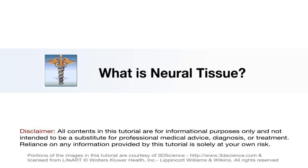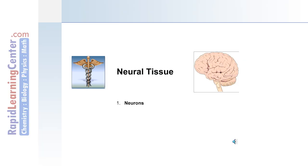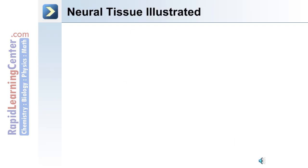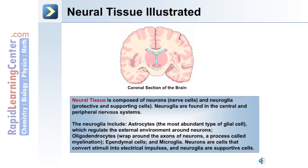The third type of tissue in the human body we'll discuss is neural tissue, including the neurons as well as the neuroglia. Neural tissue is composed of neurons or nerve cells and the neuroglia, which protect and support the neural tissue.